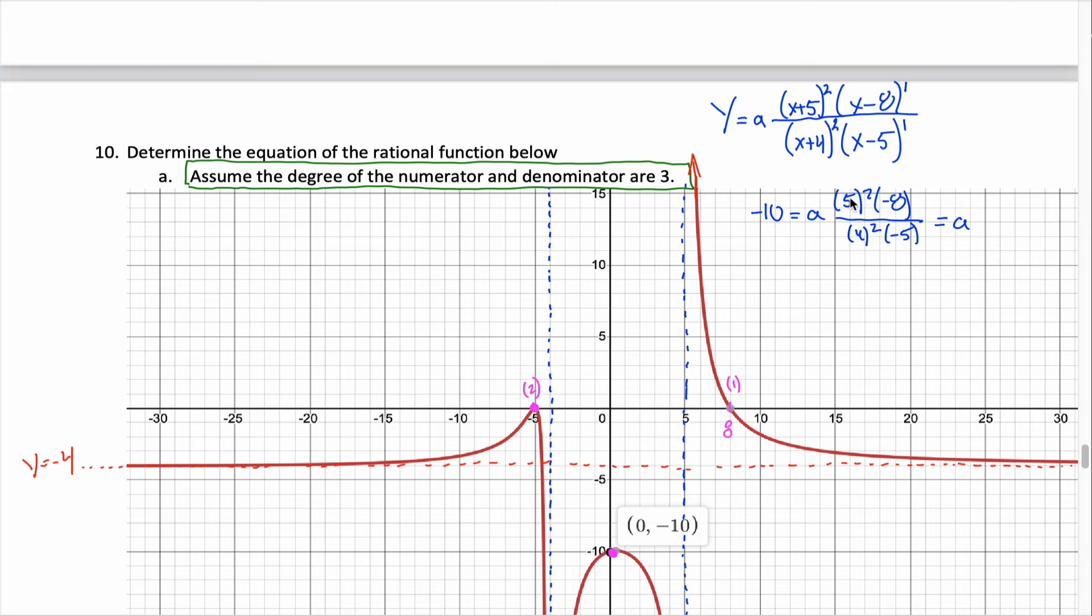This 5 and one of these 5s cancel, so I'm left with a 5 up top. And then I can take one of these 4s and cancel with this 8, and that would leave me with a 2 up top and a 4 down in the bottom. What I'm saying is negative 10 must be equal to a times 10 fourths. If I multiply both sides of the equation by 4 tenths to isolate the a, I get that a is equal to negative 4.